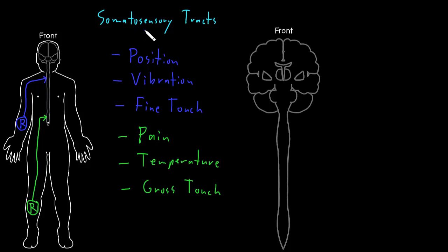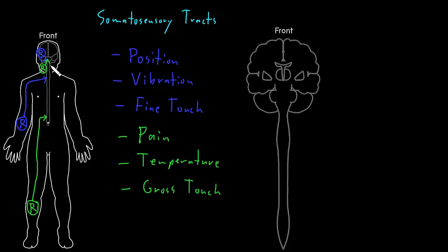The same is true for somatosensory information from the face and other parts of the head, but that information will usually enter the brain stem through cranial nerves instead of entering the spinal cord through spinal nerves. For instance, if we have a receptor that can detect vibration somewhere on the face, that information can travel through a cranial nerve into the brain stem. And if we had another receptor in the face that could detect temperature, that also could travel through a cranial nerve and enter the brain stem.